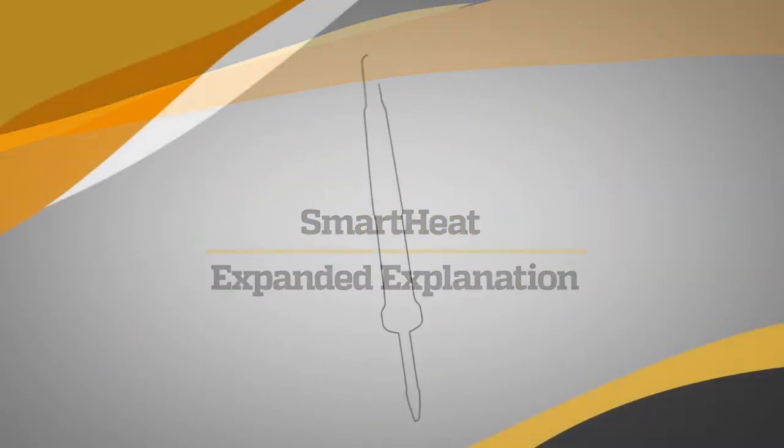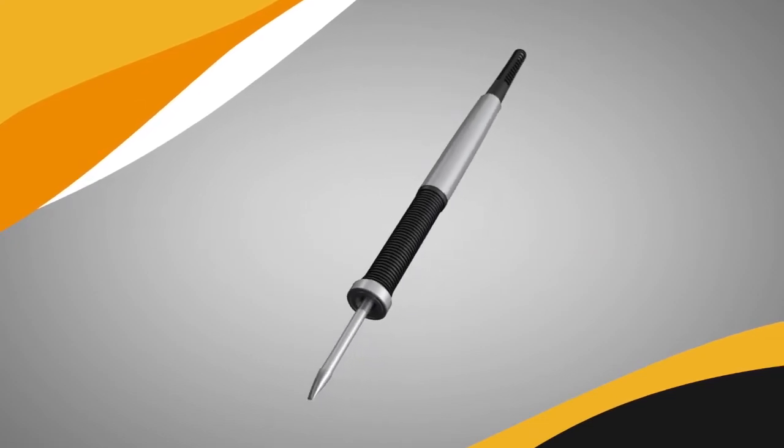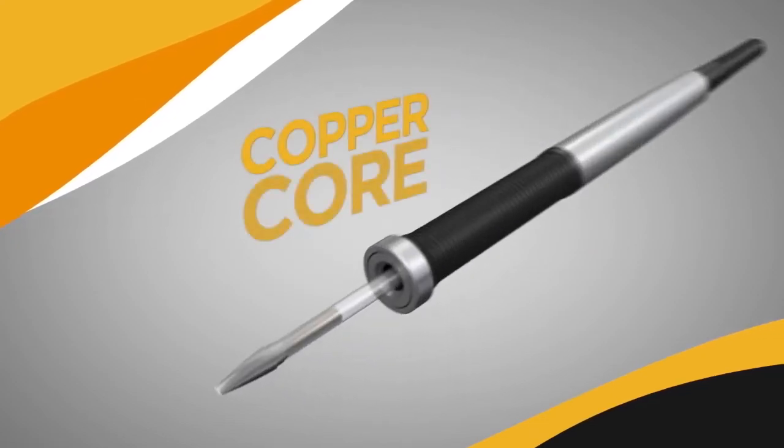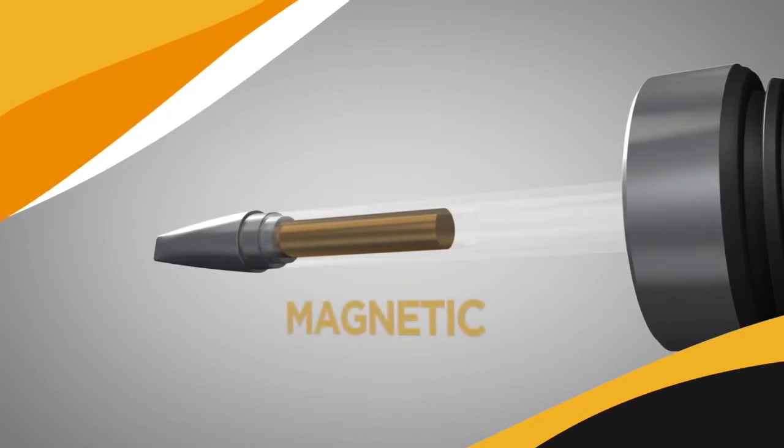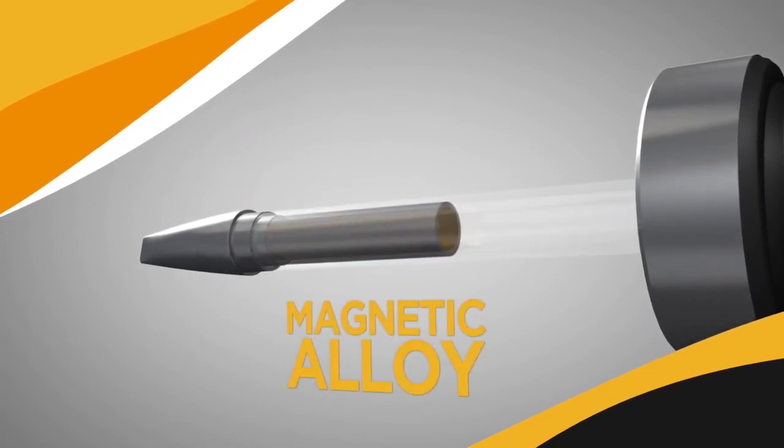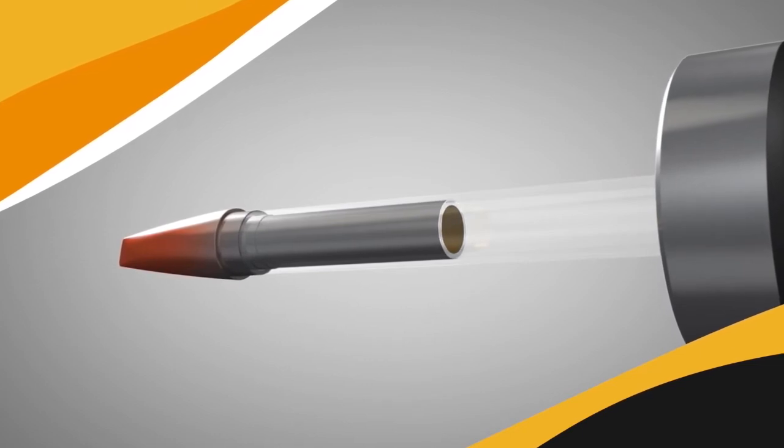The Metcal cartridge is made of a heater of proprietary design consisting of a non-heating copper core and an outer heating layer of magnetic alloy. The composition of the alloy predetermines the tip temperature.